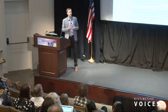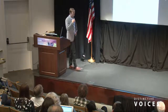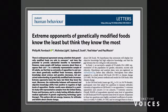The medium we use influences what we say and how that message spreads. For example, this paper recently came out in Nature News about extreme opponents of GMOs — they know the least but think they know the most. But the point isn't necessarily about this study. I put human behavior up here — it's a medium that conveys signals. But what happens when something like this goes up? Astrophysics and Aerospace Technology — it looks pretty legitimate. It looks like a journal. It even says open access. It has an ISSN number. But when you start reading the first paragraph, you'll get disoriented really fast.